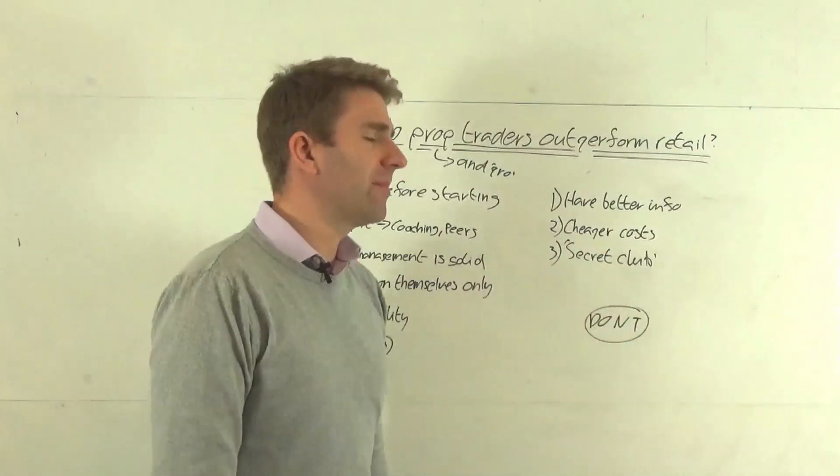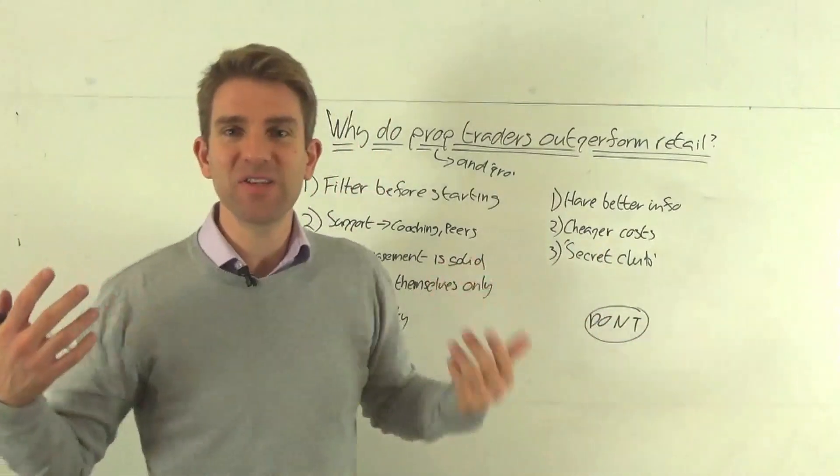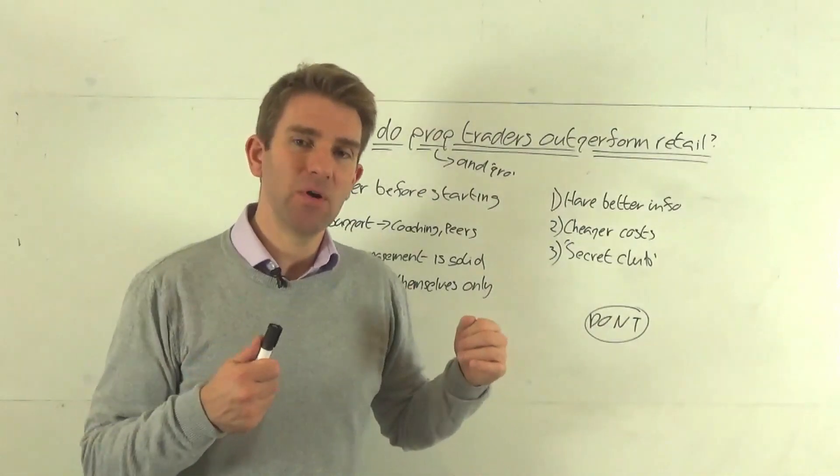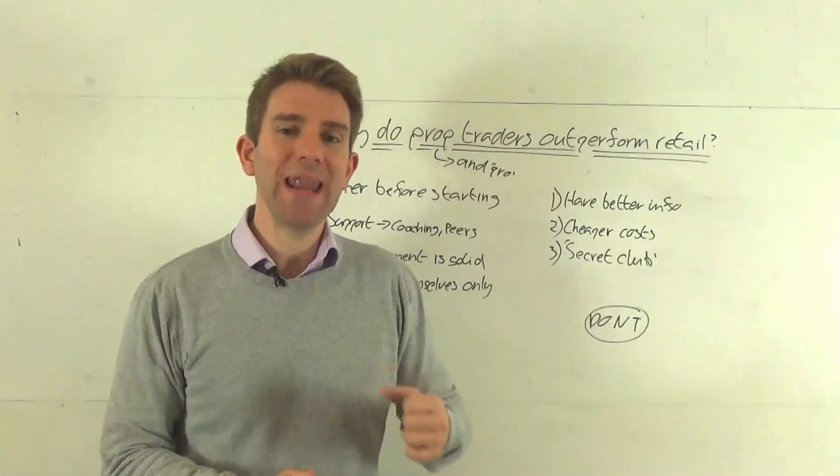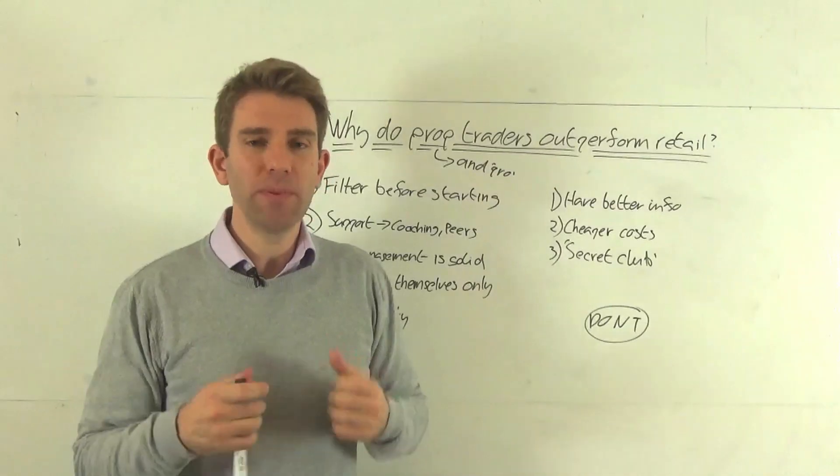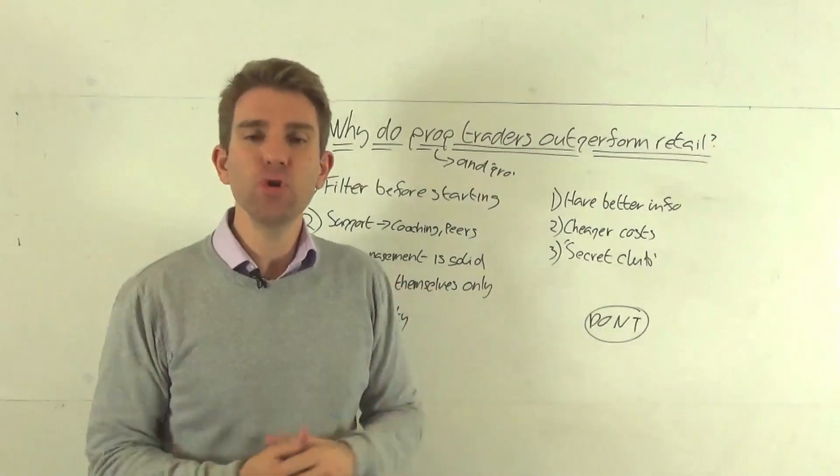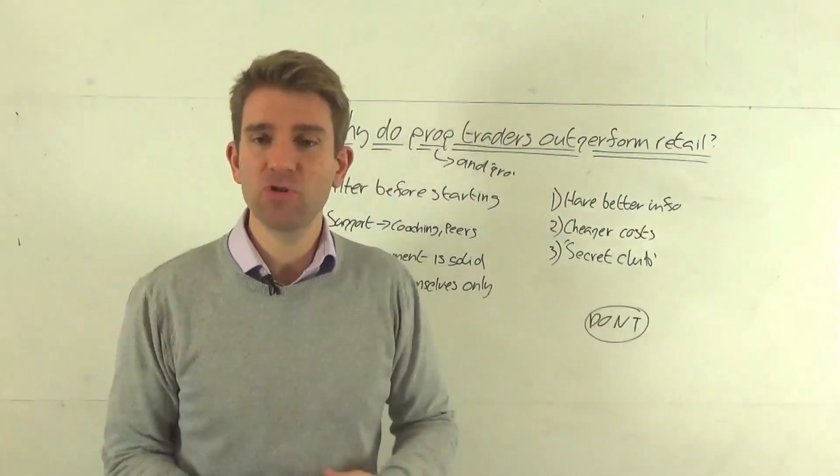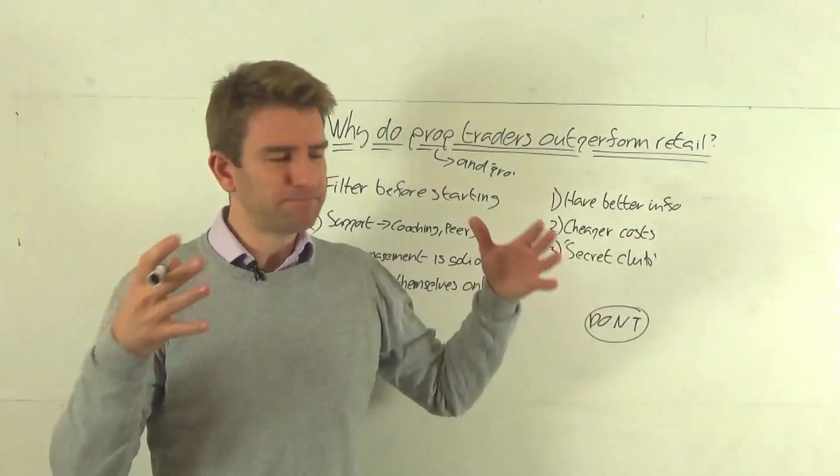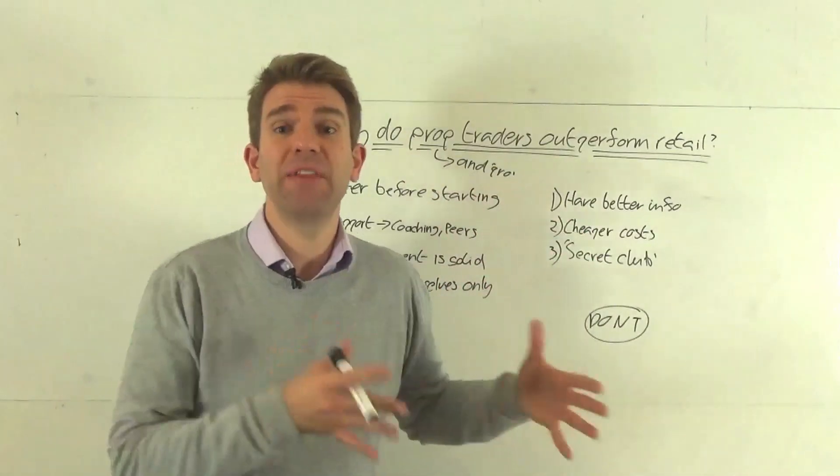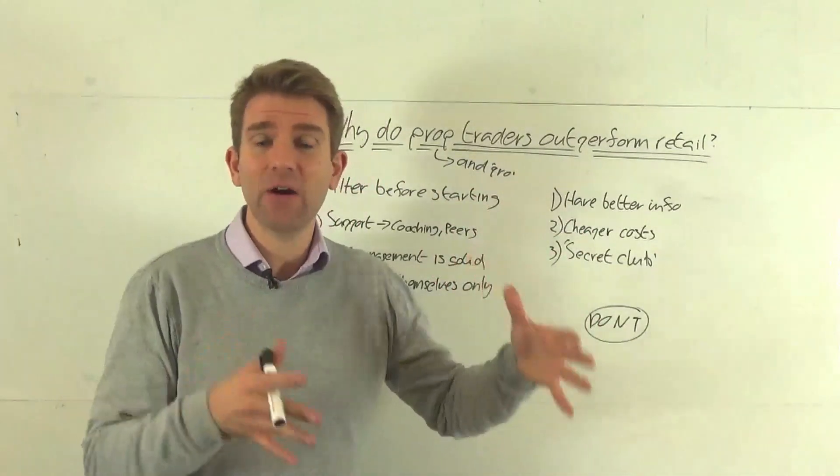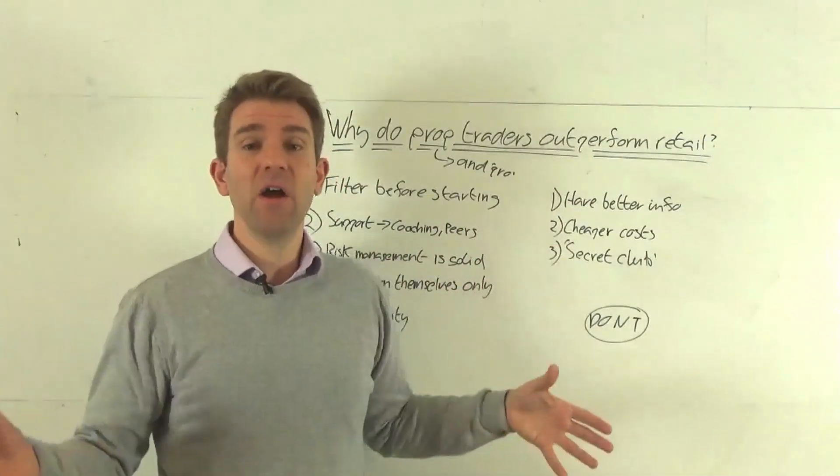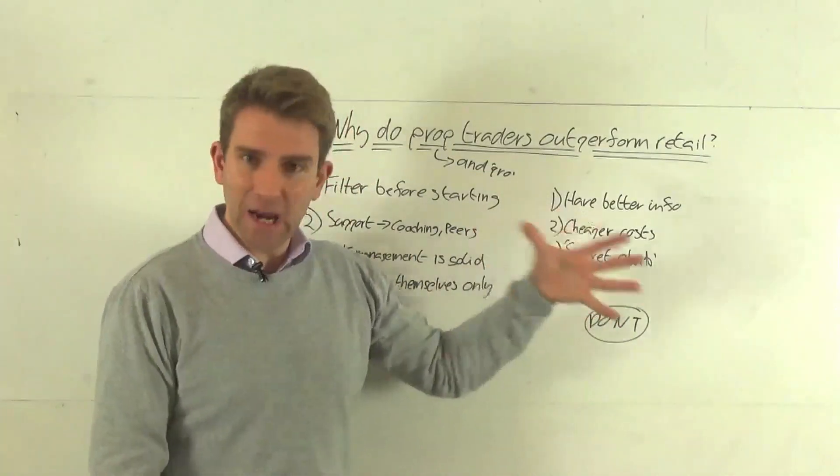Number three, secret club. This is the big myth, isn't it? It's a big secret club and everyone knows what the market's going to do. Listen, guys, if that was the case, then the most powerful hedge funds in the world would never, ever lose money. They would be making absolutely huge amounts of money consistently. We just have to look at some of the track record of some of the greats like Paul Tudor Jones hedge fund. Some of the big hedge funds, they have down months, they have down years, they have down quarters. They wouldn't do that if it was a secret club and they knew what was going on. Forget about that.